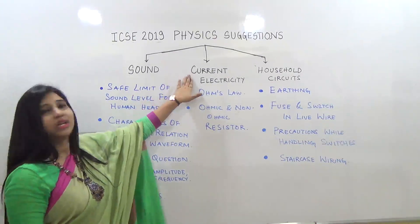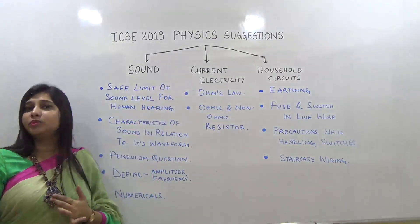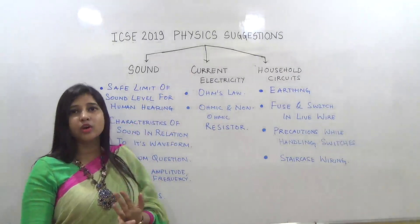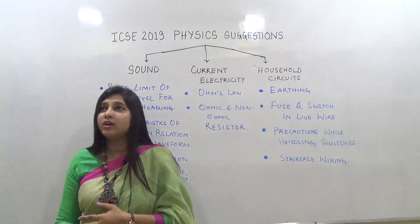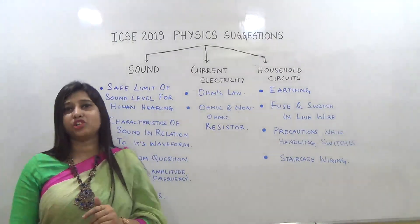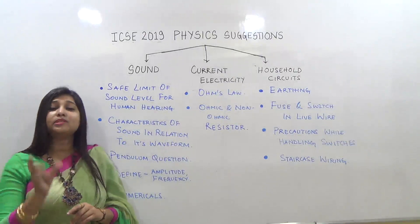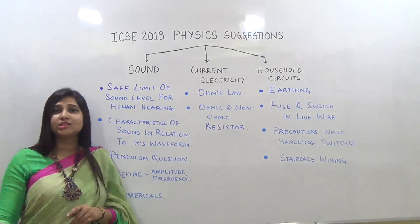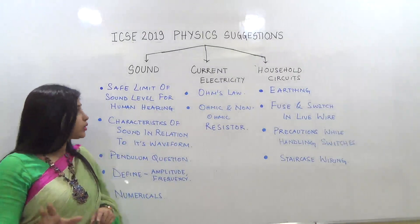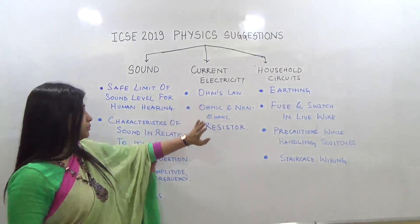Now we have current electricity. Ohm's law is very important. First, you need to define Ohm's law, and then there can be a circuit diagram for verification of Ohm's law — you need to draw and label the circuit diagram properly.